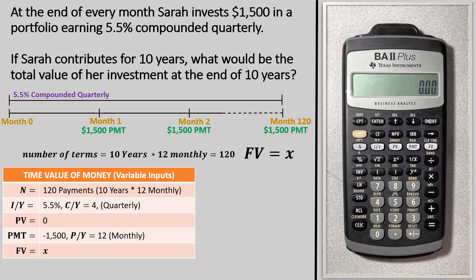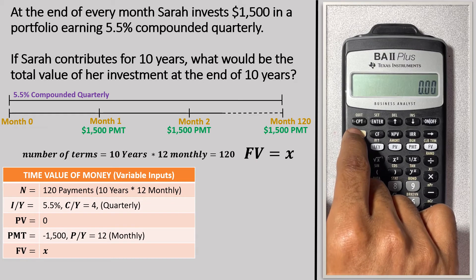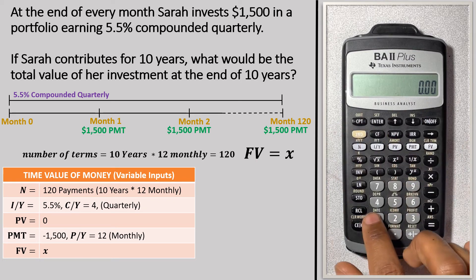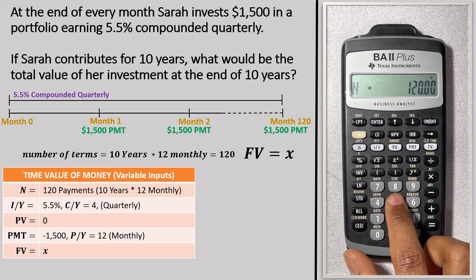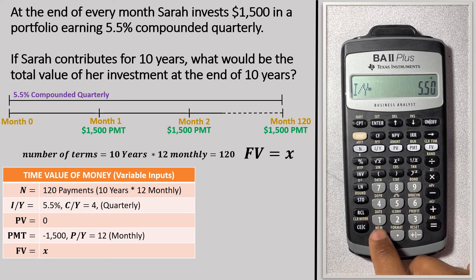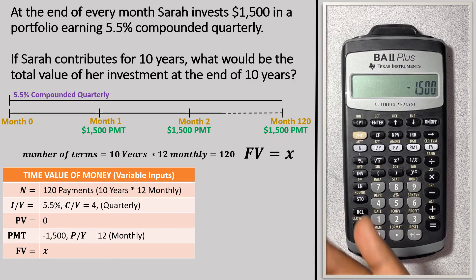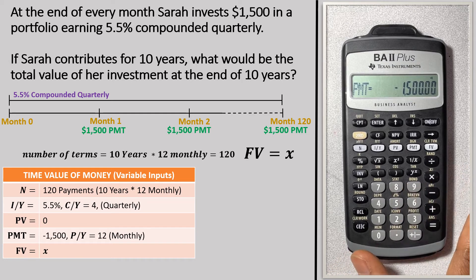Best practice when using the financial calculator is to first clear inputs from any previous calculation to reduce errors. Press 2nd → CLR TVM to clear. Now enter the TVM inputs: 120 for N; 5.5 for I/Y — hold off on compounding frequency for now; 0 for PV; and −1,500 for PMT, since it's a money outflow. No future value is entered yet.